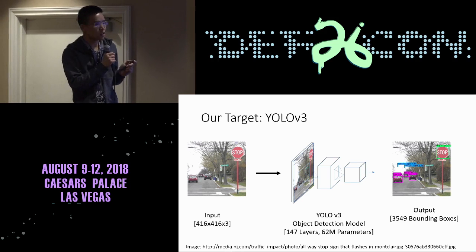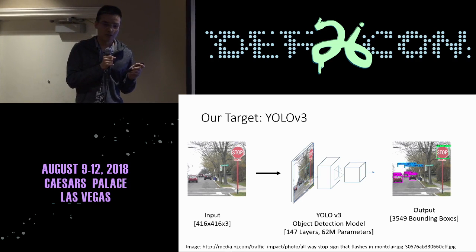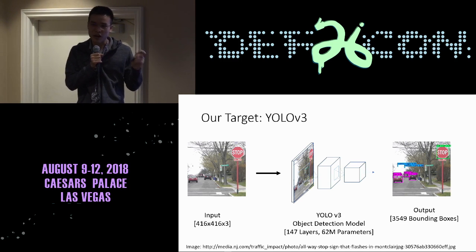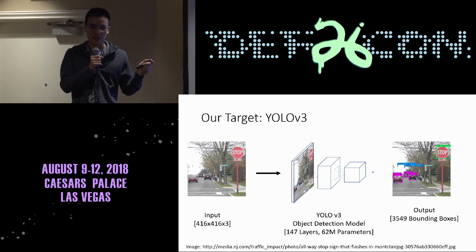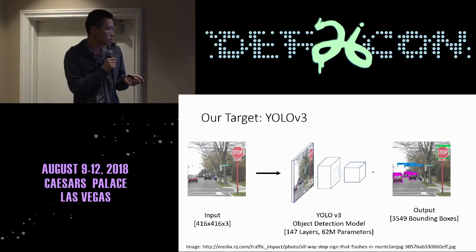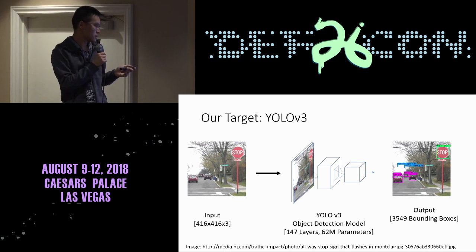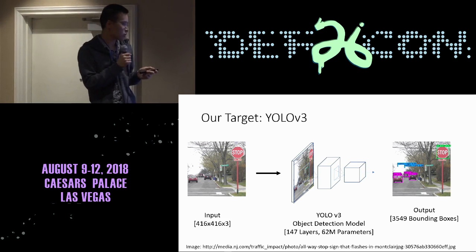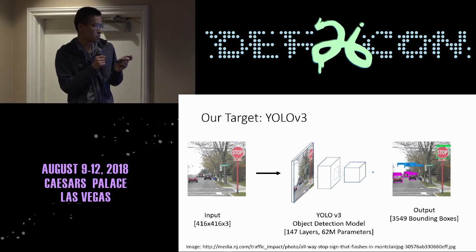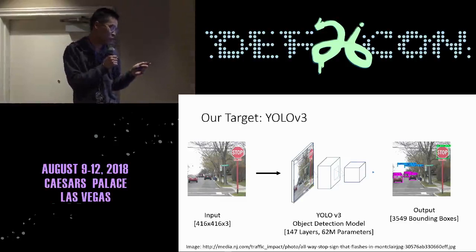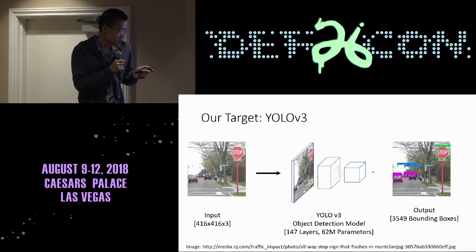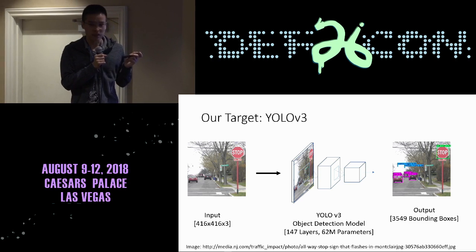Our target is the YOLO V3 model, which is very famous in computer vision. I believe some self-driving cars use similar architectures, even though they use different training sets. This model takes input of 416 by 416 pixels in three RGB channels — so it's a color image input. The YOLO V3 model is huge: it has 147 trainable layers and 62 million trainable parameters in total.